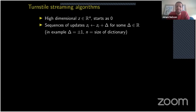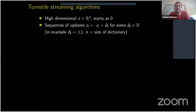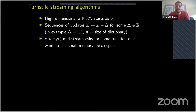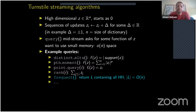All this fits into turnstile streaming algorithms. There's a high-dimensional vector z starting at zero — think of it as the histogram. A sequence of updates adds some delta to some entry: z_i gets z_i plus delta. In frequent items delta is always +1; in change detection, yesterday's items get -1 updates and today's get +1, so z_i at the end is the difference between today and yesterday. A query asks for some function of z midstream. Distinct elements is another classic query — just the support size of z. Today we focus on the frequent query.